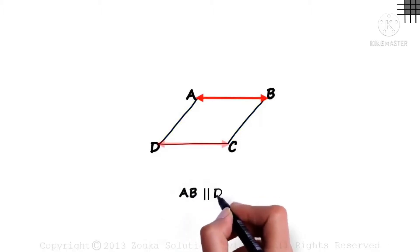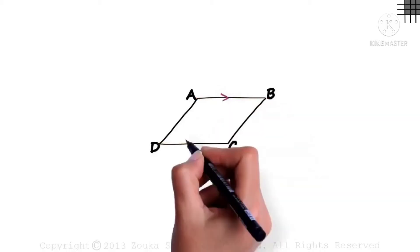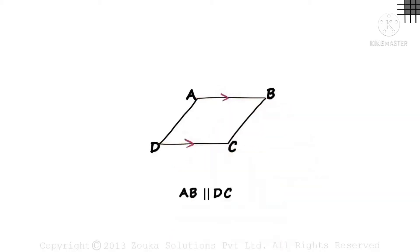In a parallelogram, AB is parallel to DC. Parallel means the two lines will not intersect each other. The lines will not intersect each other.